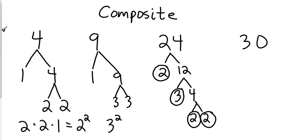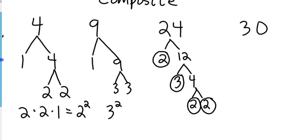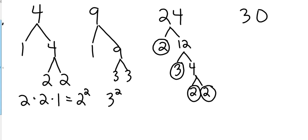Two and two are both prime numbers. So how would I write this prime factorization? This would be, how many twos do I have? I have one, two, three. So this is going to be two to the third power. And then I have one three. So two to the third power times three.